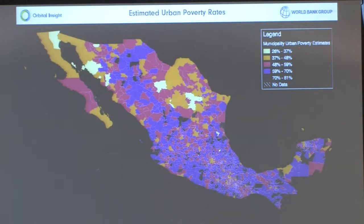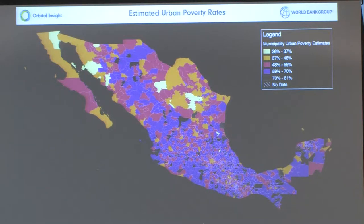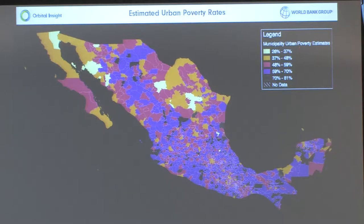The goal is to create a map like this — one of the preliminary final outputs we've created. These are all the municipalities in Mexico, approximately two and a half thousand municipalities. This shows the estimated poverty rates for the urban portions of each of these municipalities, representing the percentage of the population we estimate to be poor in those urban portions.